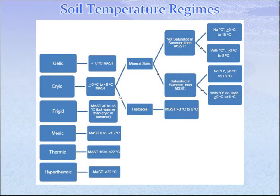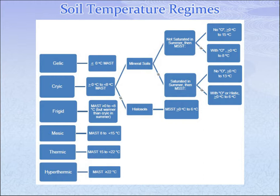One thing we've done is put the soil temperature regimes into a flow chart, so you can see where you are and how it moves. For example, if you're Gelic, your mean annual soil temperature is less than zero degrees C. For Cryic, if you are between zero and eight degrees C mean annual soil temperature in a mineral soil not saturated in summer, your temperature range shifts accordingly. It's a way of walking you through the entire process of determining temperature regime.